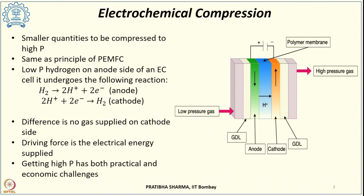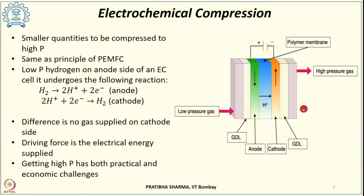The major difference of an electrochemical compressor from a polymer electrolyte membrane fuel cell is that gas is not passed onto the cathode side. So there is no gas flow onto the cathode side, meaning the reaction of hydrogen with oxygen to produce water, which used to occur in a PEMFC, does not occur here.